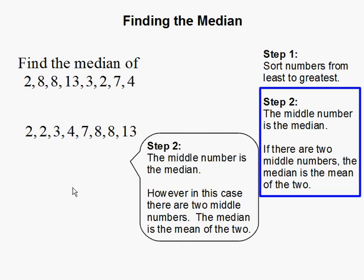In step 2, the median is the middle number. So in this case, we have two middle numbers and they are 4 and 7.